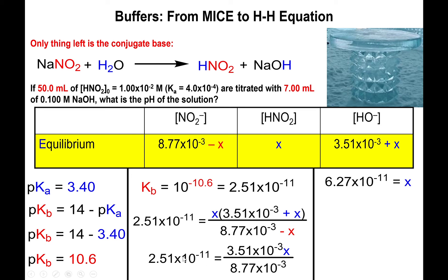Multiplying 2.51 × 10⁻¹¹ by 8.77 × 10⁻³ and dividing by 3.51 × 10⁻³ gives x = 6.27 × 10⁻¹¹. An important mistake to avoid: do not take the negative log of x and call it pOH, because x is the change in hydroxide concentration, not the hydroxide concentration itself. The original hydroxide concentration of 3.51 × 10⁻³ is far larger than 6.27 × 10⁻¹¹, making the change essentially inconsequential.